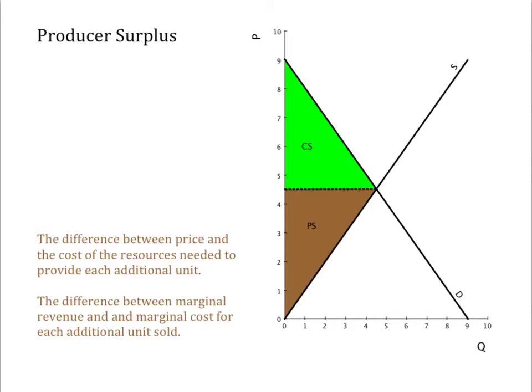You are likely introduced to the concept of producer surplus with a diagram that highlights the similarity of producer and consumer surplus. The brown triangle measures the difference between the price sellers receive and the minimum amount they need to get to be willing to provide additional units of Q.